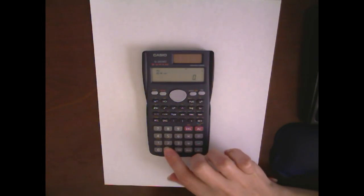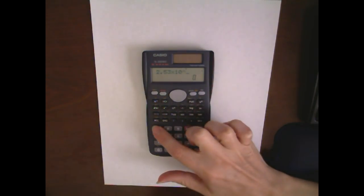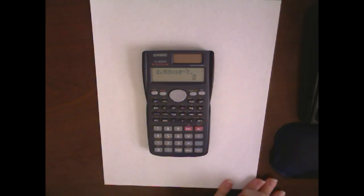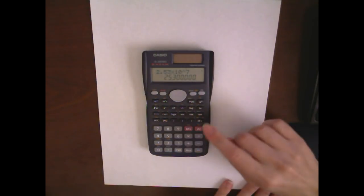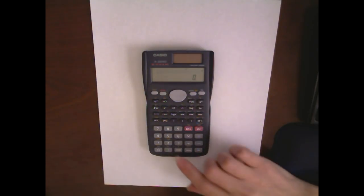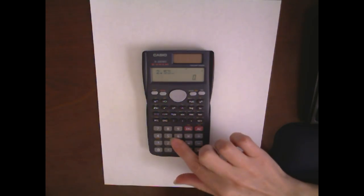If I do the standard typical notation like you might see written out—2.53 times 10 caret 7 to tell me that's to the seventh power—it gives me the result. But what I want to show you here is the easier way to do this.